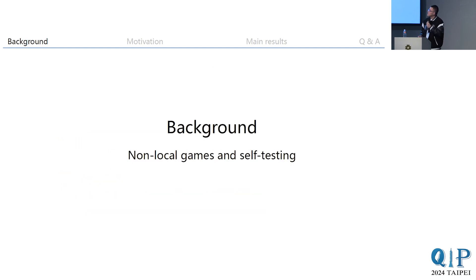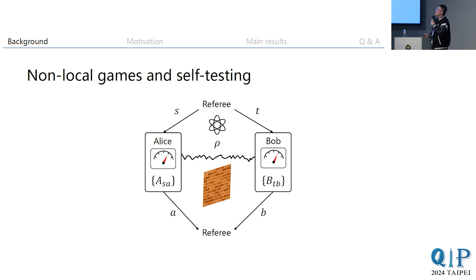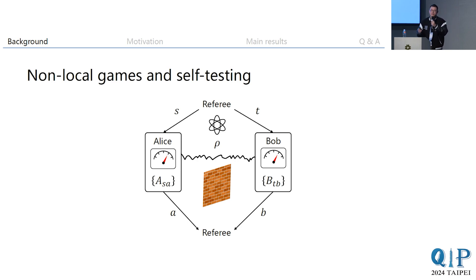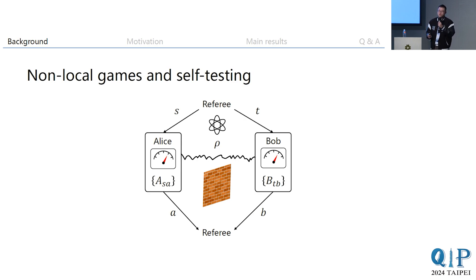Let's get started. The non-local game happens in the very typical bipartite Bell scenario where we have two players, Alice and Bob, who interact classically with the referee from a finite question set and a finite answer set. During the game, the players are not allowed to communicate with each other.